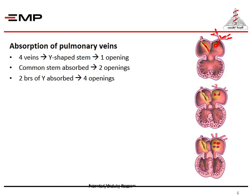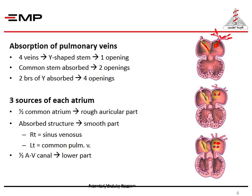In adult life the left atrium receives four pulmonary veins. Each atrium has three components: first, half of the common atrium forming the rough auricular part; second, an absorbed structure on the back — on the right side it is the absorbed right horn of the sinus venosus, and on the left side it is the absorbed Y-shaped common stem of the pulmonary veins; third, the upper part of the AV canal above the AV valves, which becomes widened in a funnel-shaped manner to enter into the formation of the corresponding atrium.